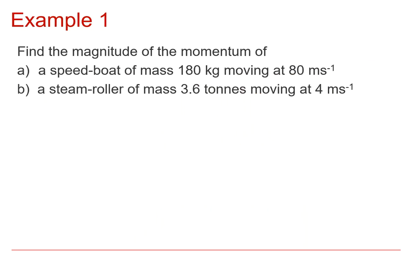So a couple of simple examples to start off with. We want to just find the size of the momentum of a speedboat, a mass of 180 kilograms moving at 80 metres per second. So applying what we saw on the previous slide, just mass times velocity, so that is 180 times 80. So that is 14,400 newton seconds.